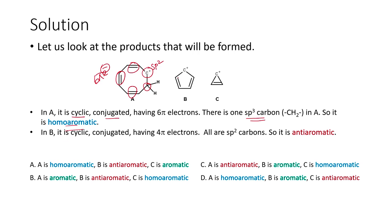In compound B, there are 2 pi bonds, so 4 pi electrons are present. This is a cyclic, conjugated system but has only 4 pi electrons. This does not follow the 4n+2 pi electrons Hückel's rule, so this system is basically anti-aromatic.